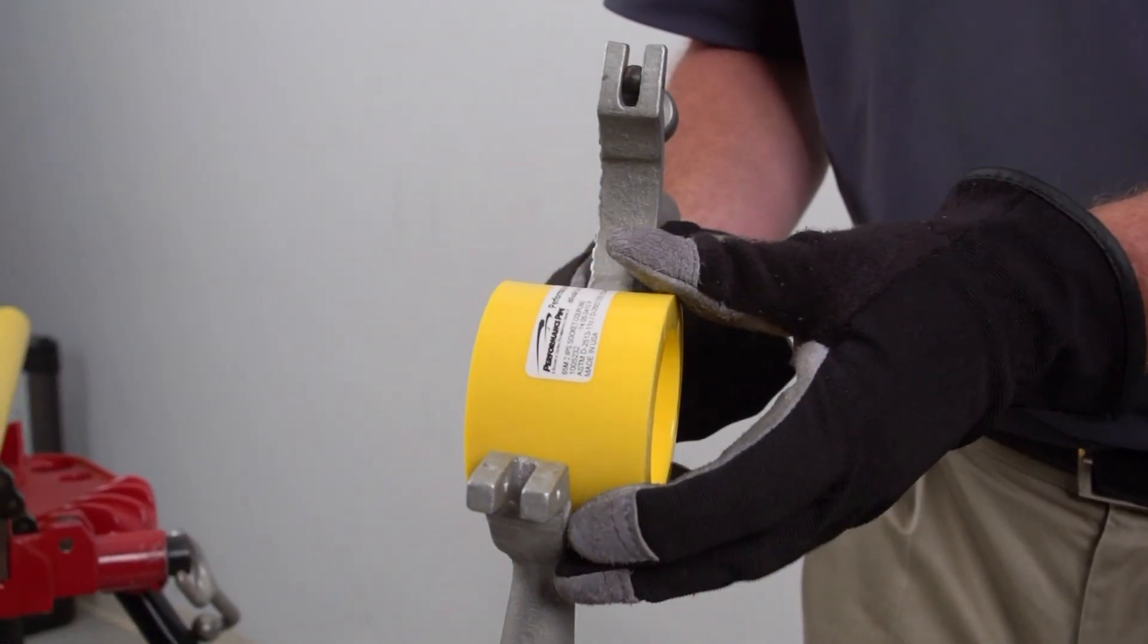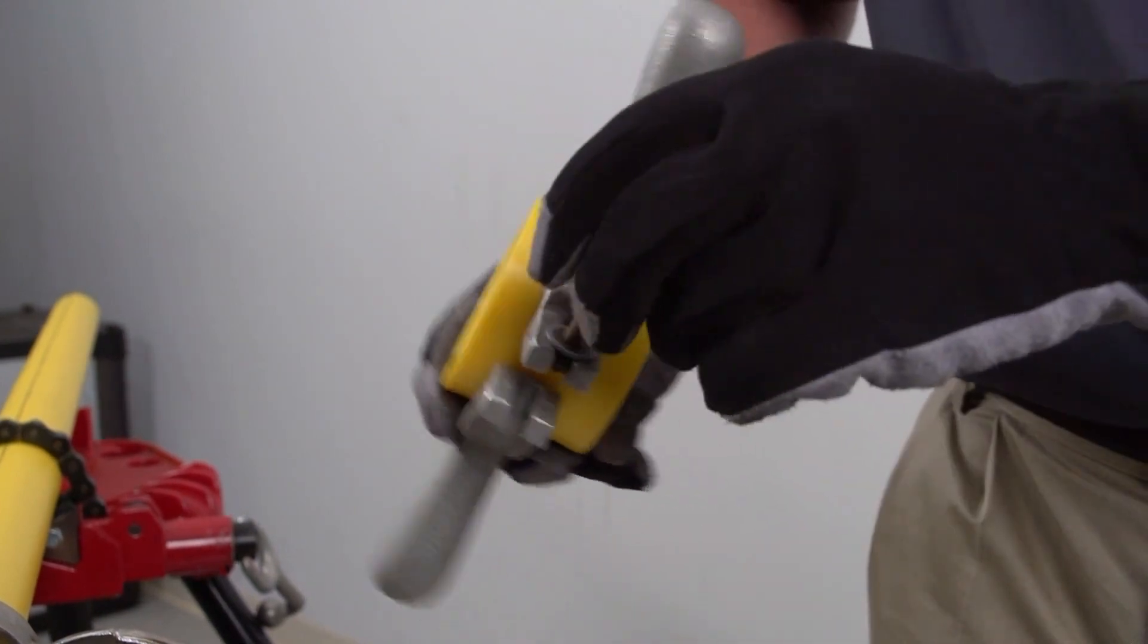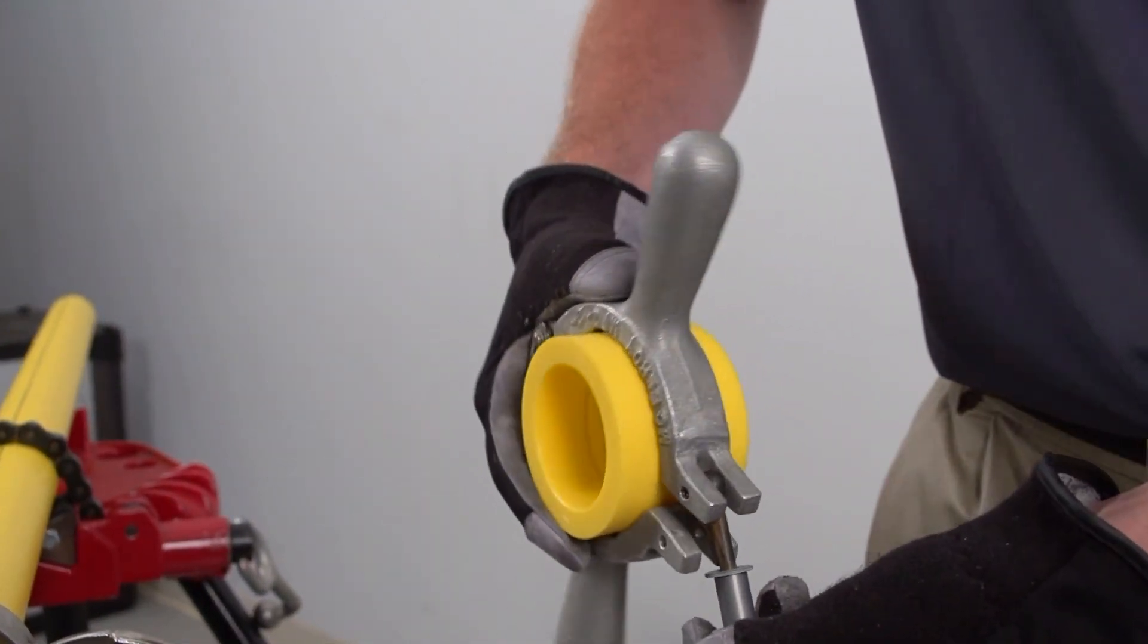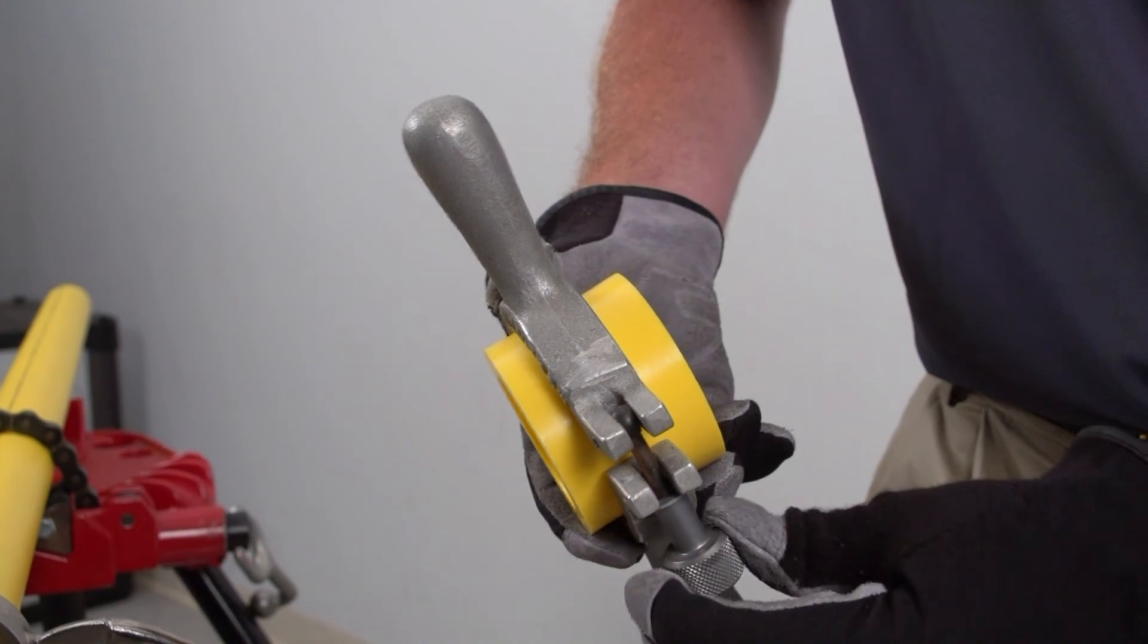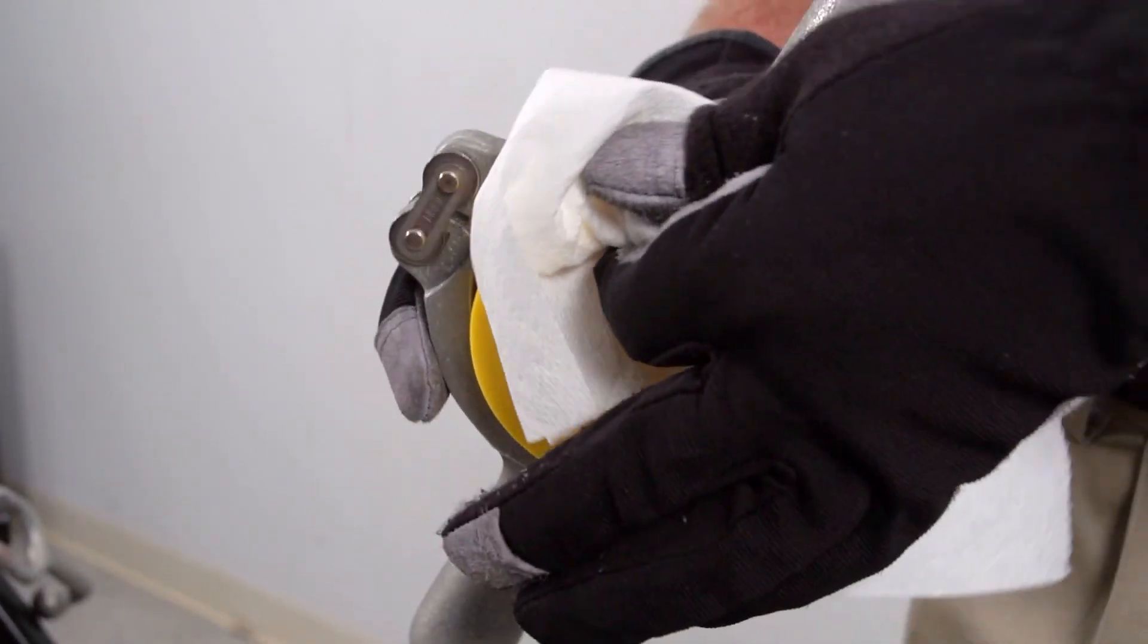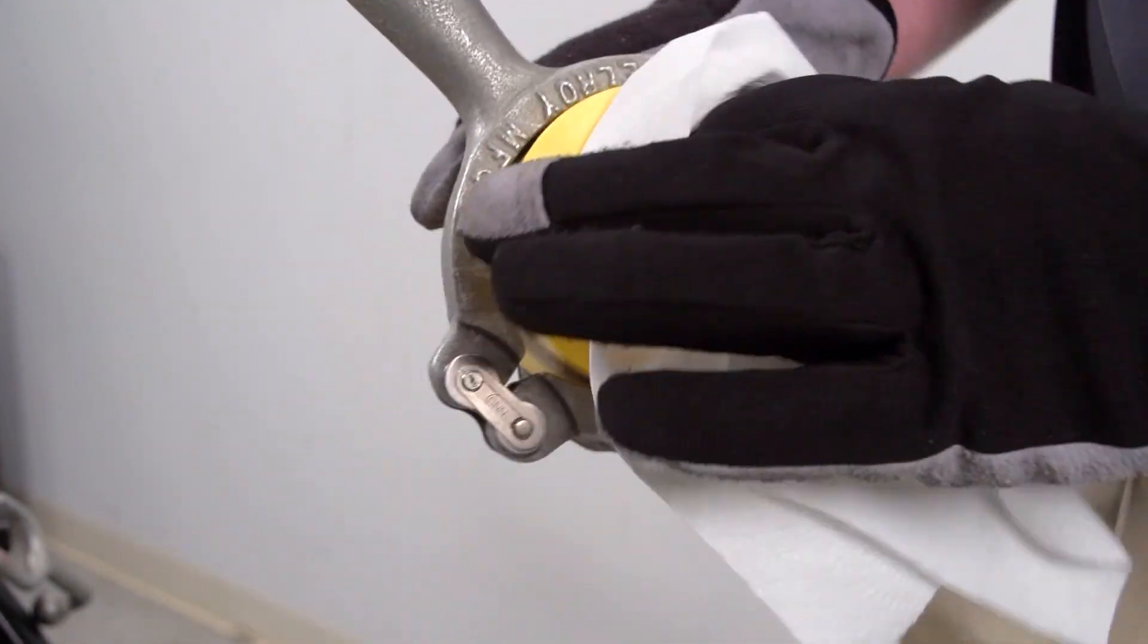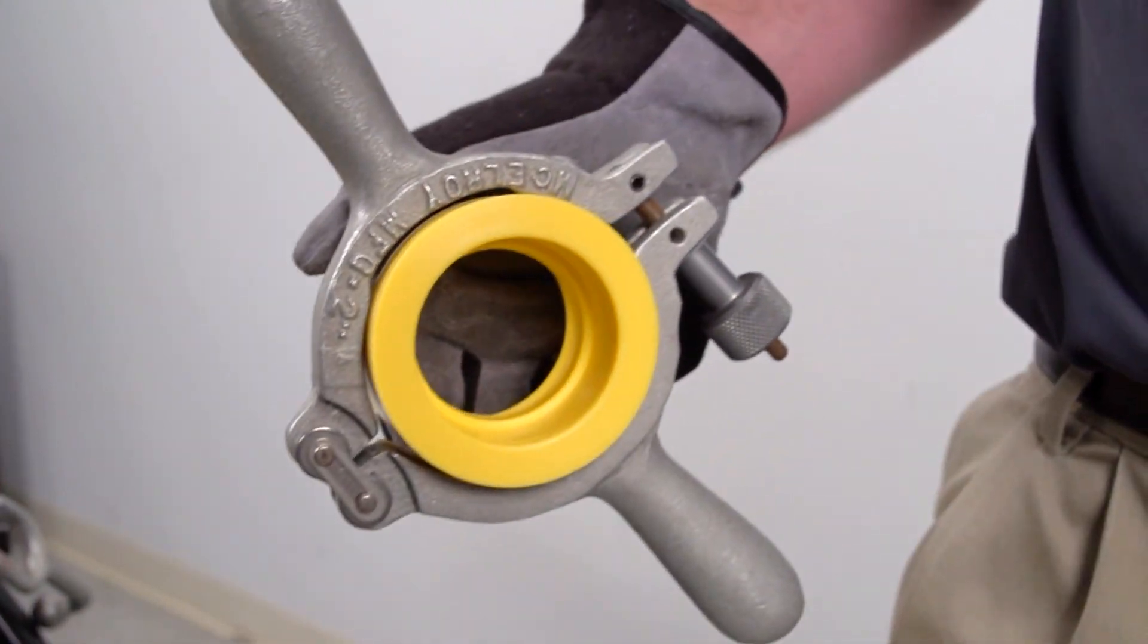Install the fitting holder if used and wipe the fitting socket with a clean, dry, lint-free cotton cloth or paper towel. Do not touch clean surfaces with your hands. Refer to ASTM F2620 or Performance Pipe Bulletin 750 for the recommended heating and cooling times for the correct pipe size.